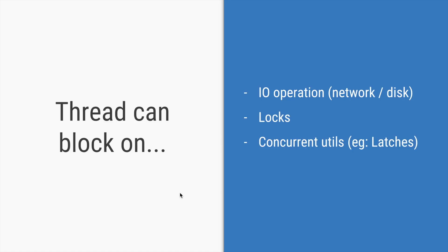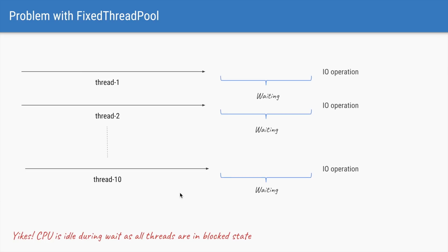Let's say the I/O operation of fetching a product from an external site takes two seconds. In those two seconds, all 10 threads will hit that external site for 10 products, but they all need to wait two seconds. That is an inefficient use of the CPU, because your CPU is idle for those 10 seconds while all the threads are waiting for the I/O operation to complete.